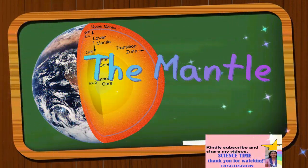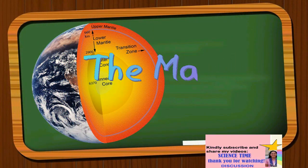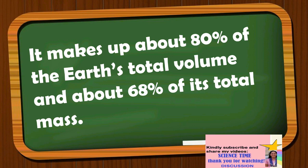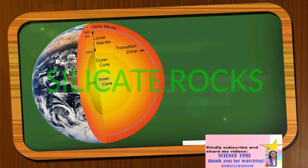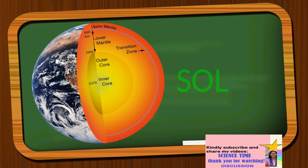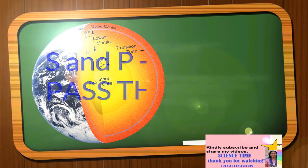The mantle is beneath the crust and extends to about 2,900 kilometers from the Earth's surface. It makes up about 80% of the Earth's total volume and about 68% of its total mass. The mantle is mainly made up of silicate rocks and, contrary to common belief, is solid, since both secondary waves and primary waves pass through it.